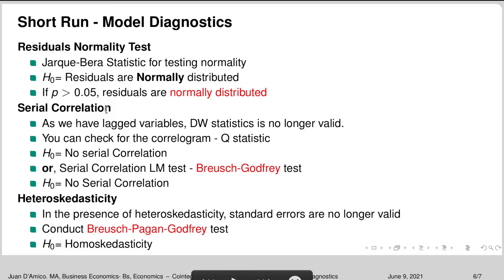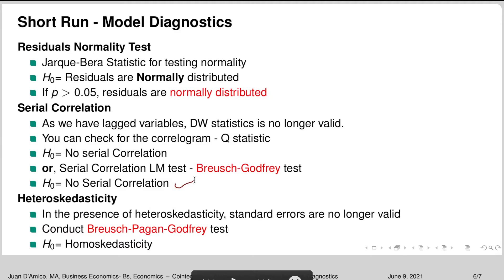Next, we check for serial correlation. Because we have lagged variables, the Durbin-Watson statistic is no longer valid. Instead, we check the correlogram, particularly the Q-statistic column — the null hypothesis is no serial correlation. We can also conduct the Breusch-Godfrey test, which also has a null hypothesis of no serial correlation. Let's go into EViews and perform both tests.